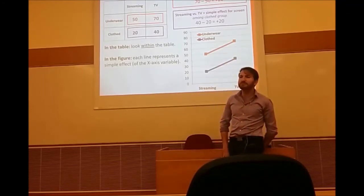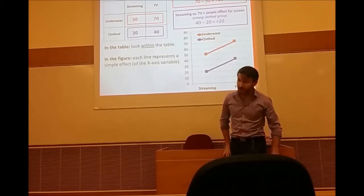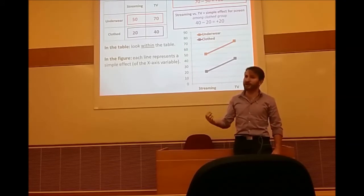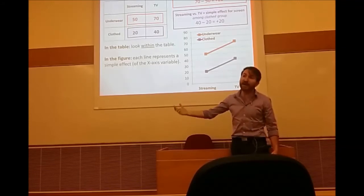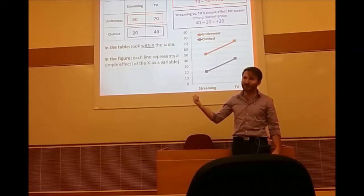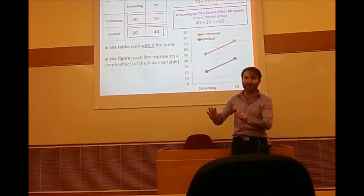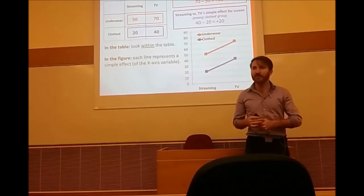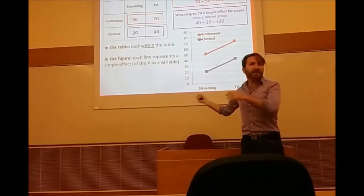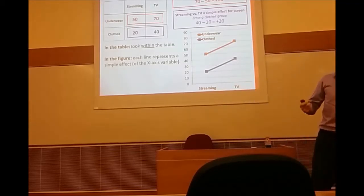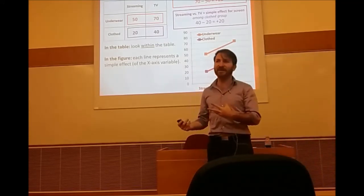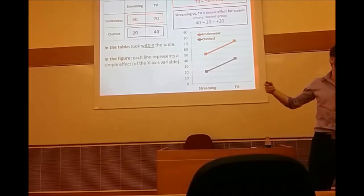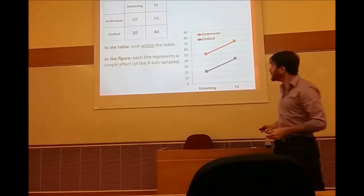This figure is also easy to read looking at the lines variable — the clothing variable. To find the simple effect of clothing among the streaming group, look at 50 (underwear streaming) and 20 (clothed streaming). The simple effect of clothing among the streaming group compares underwear versus clothing. And similarly, underwear versus clothing among the TV group gives the simple effect of clothing among the TV group.